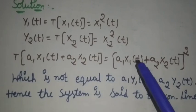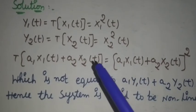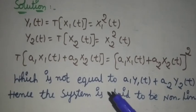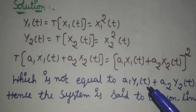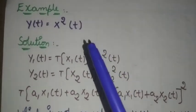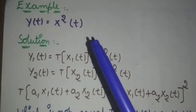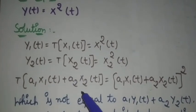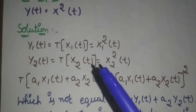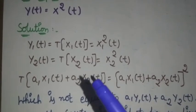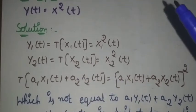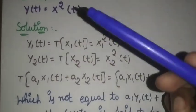So LHS is not equal to RHS. It does not satisfy the linear system condition. Hence, the system is said to be non-linear. In this way, we can find whether a system is linear or non-linear depending on whether the total overall response of the system equals the sum of individual responses. If yes, the system is linear; otherwise, it is non-linear.